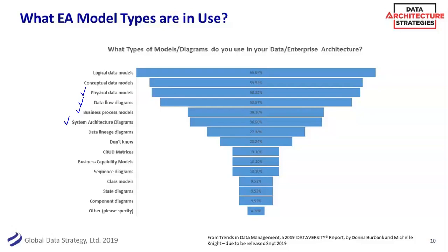Data lineage is also done as a diagram, and there are a lot of good tools in data catalogs and metadata space — next month's webinar is on metadata and lineage tools. CRUD matrices — I'll talk a bit about those today. I'm a fan of them. They're one of these old-school things that are still valuable: where is data created, read, updated, and deleted? I was a little disappointed to see business capability models are lower in the survey results, because I use them a lot. The Unified Modeling Language is also another good way to see the bigger picture.